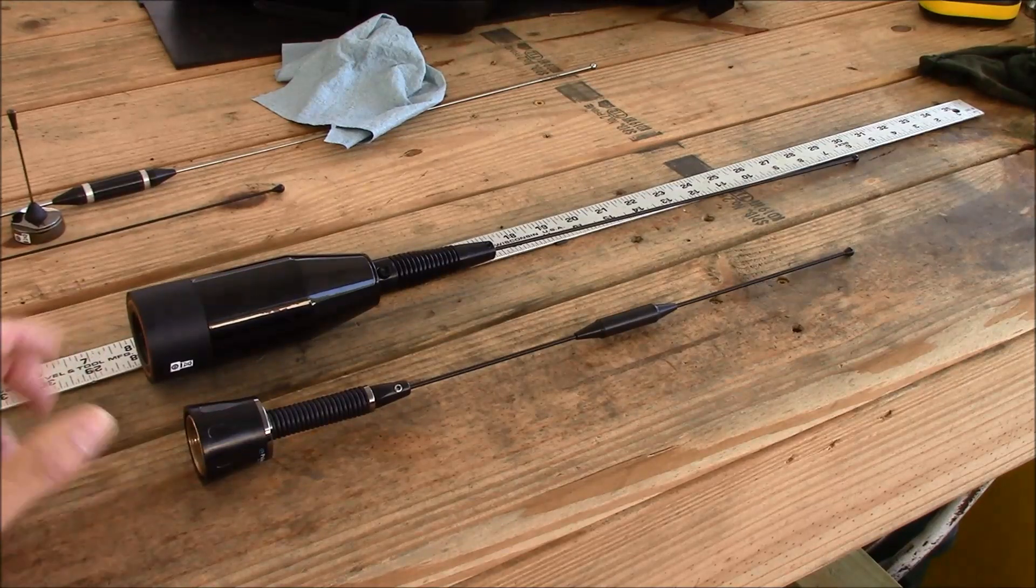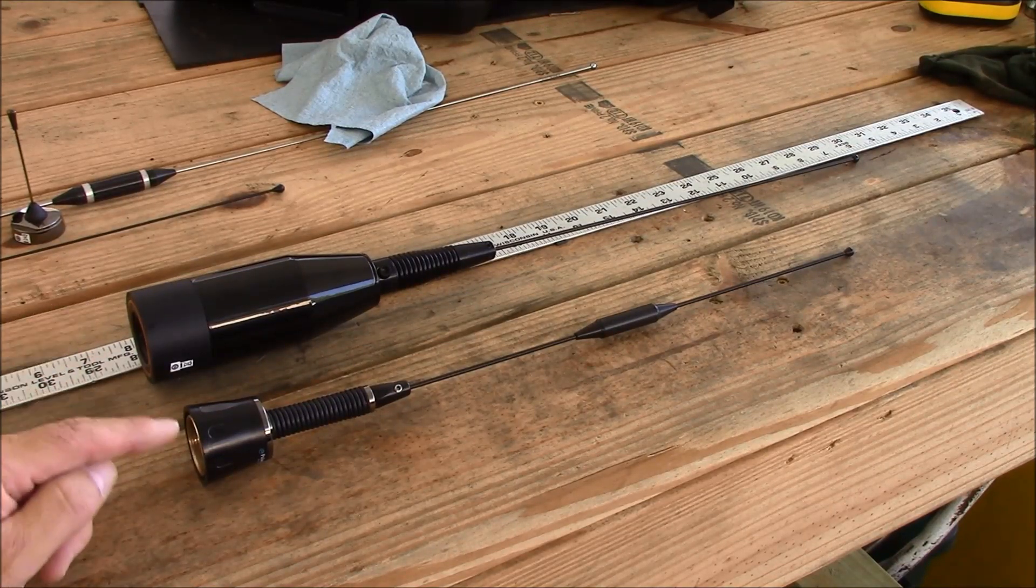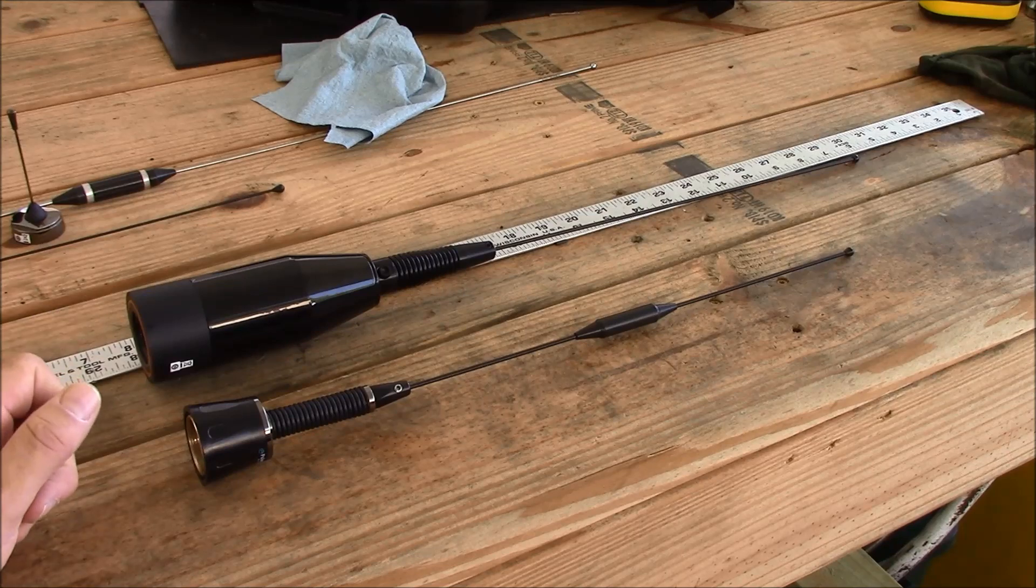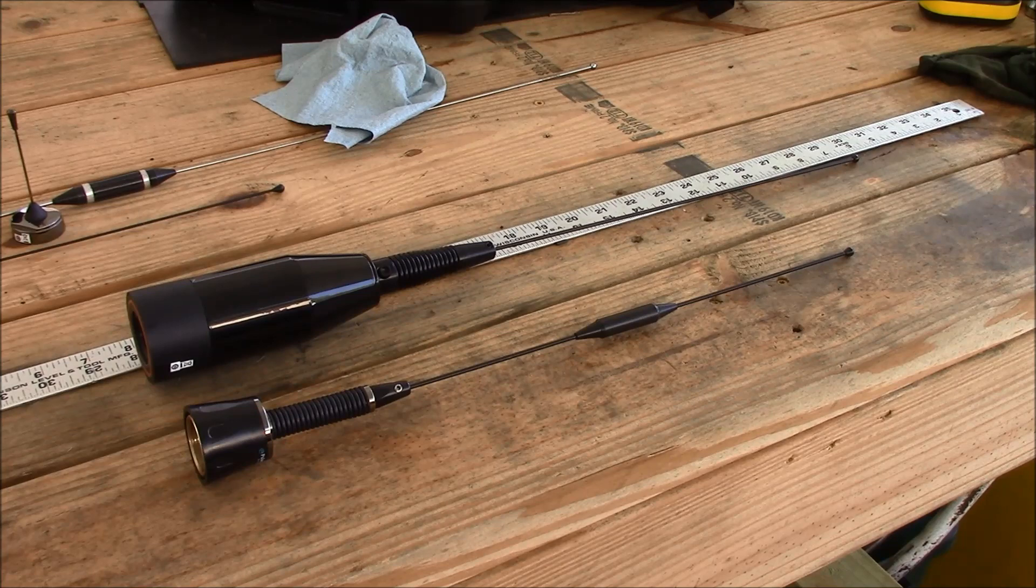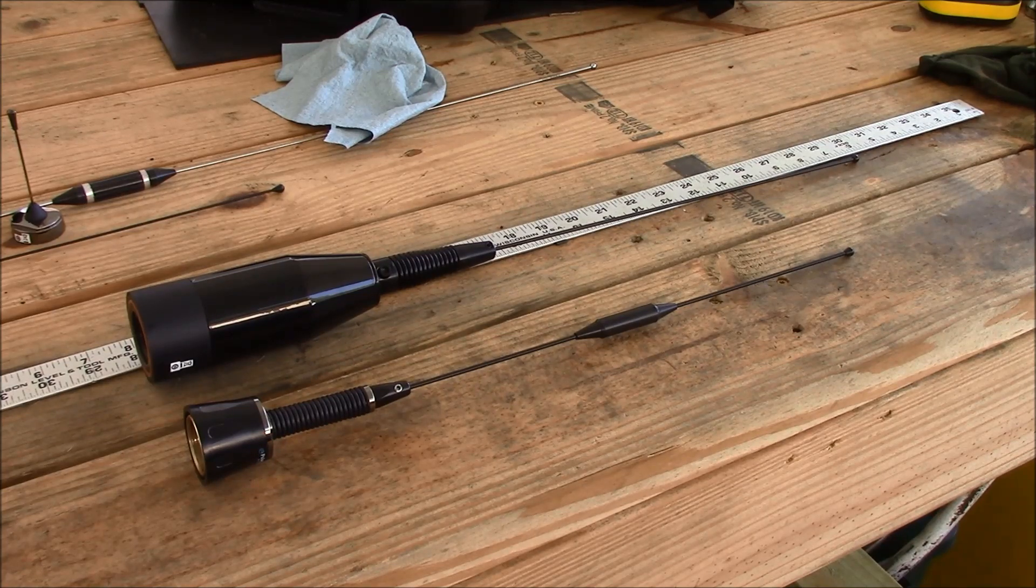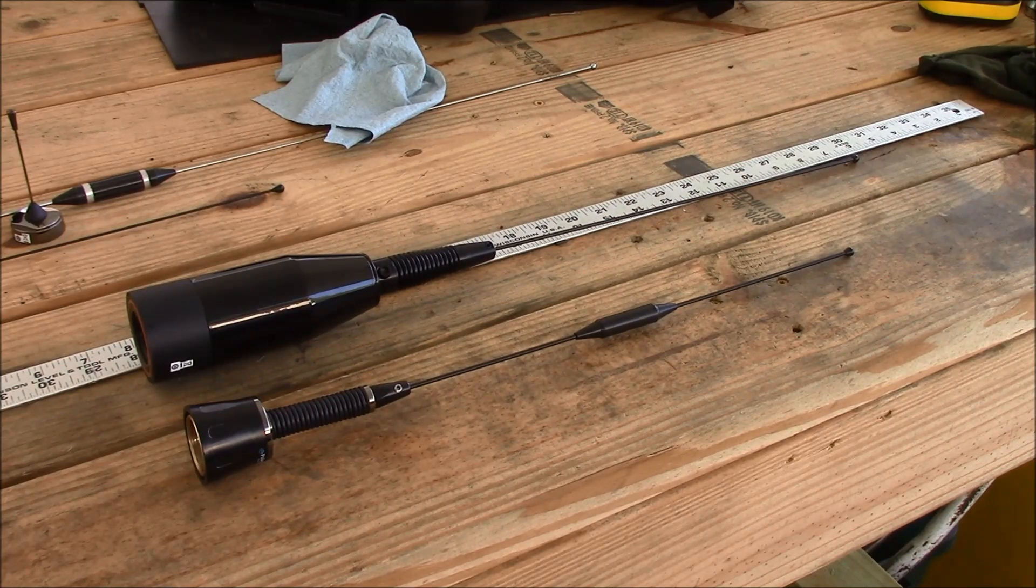So comparing these two tri-band antennas to one another, the Motorola and the Pulse Larson, the Motorola held the advantage in VHF, the Pulse Larson in UHF. And both of their 700-800 MHz coverage covered across that entire range of spectrum.